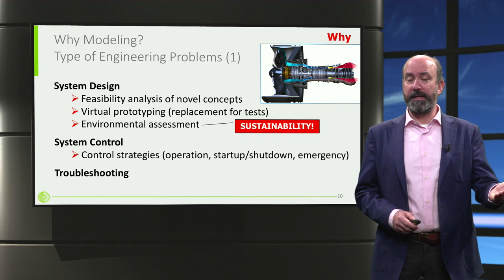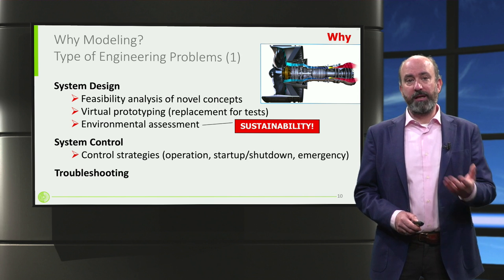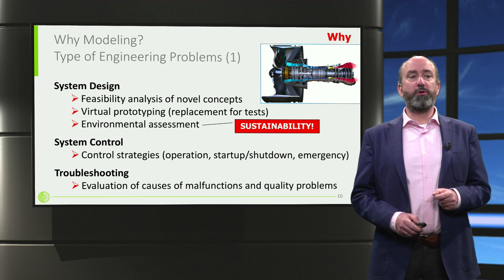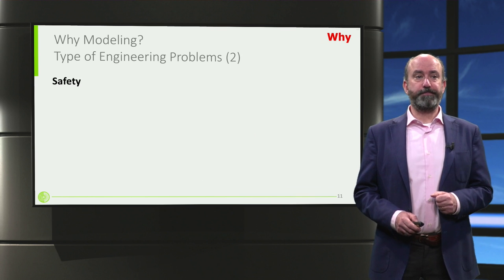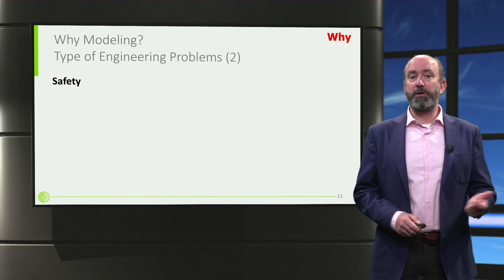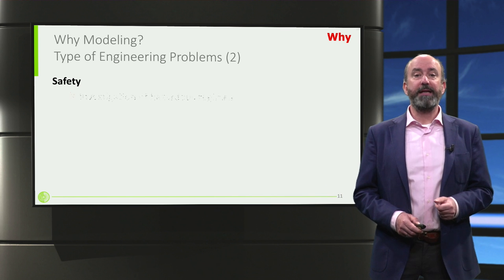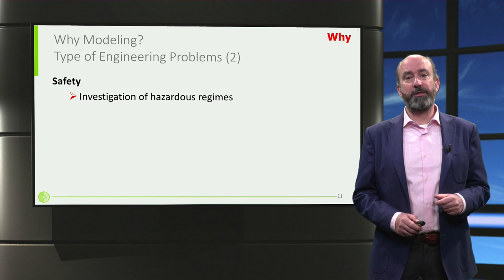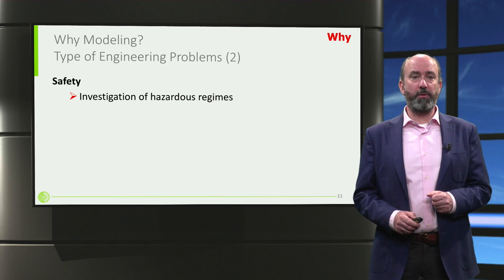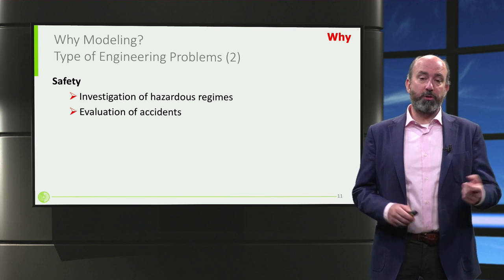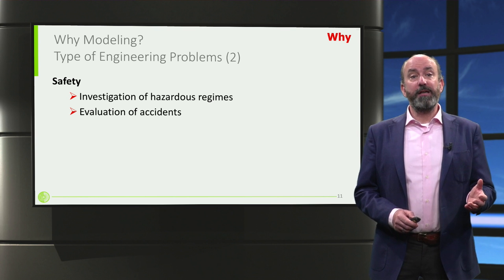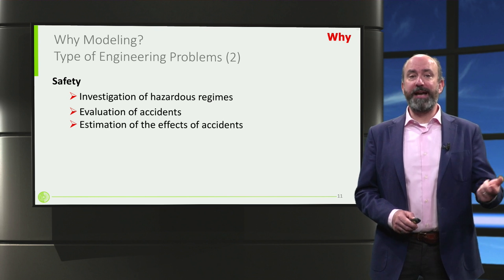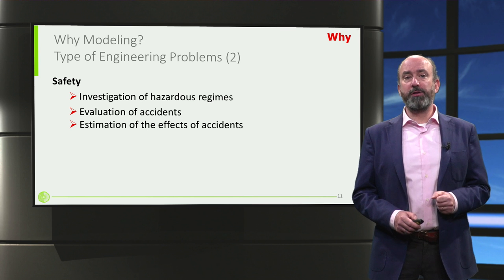Troubleshooting: once the system is realised, very often — especially if it's a new system — there are problems, and models can help us understand if there are faults, how to solve them, and how to resolve malfunctions. Safety is, of course, extremely important. On an aeroplane, models can help us prevent hazardous operation by understanding the complex reactions that happen when a hazardous situation arises, and can help us understand what caused an accident or estimate its effects.